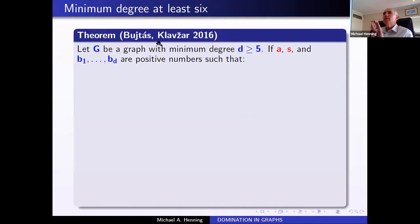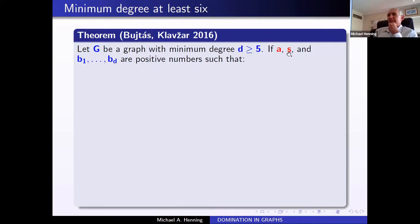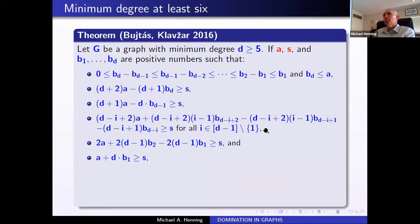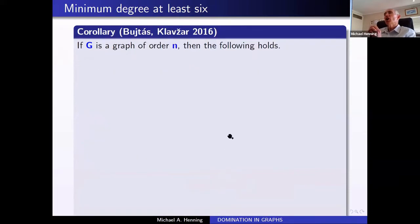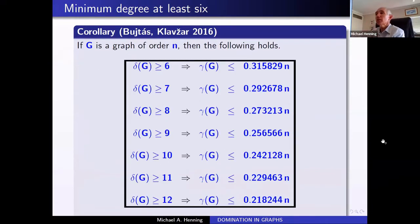Sandy Klavžar and Bujtás proved a general result: if a graph has minimum degree δ, and real numbers A and s satisfy a set of inequalities, then the domination number is at most (A/s)·n. As a consequence, they derived the best known bounds for larger minimum degrees — at least six up to 50. For large minimum degree (100 or more), probabilistic methods suffice, but for small minimum degree their bounds are the best available.